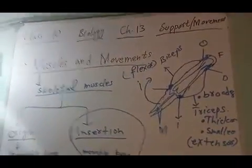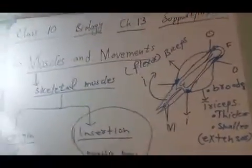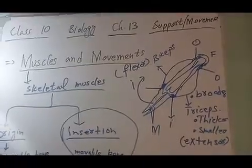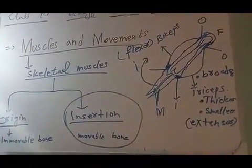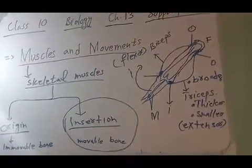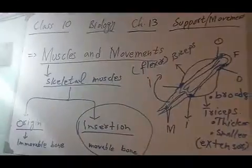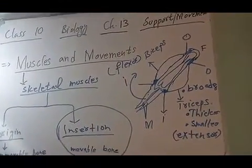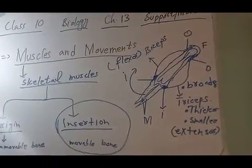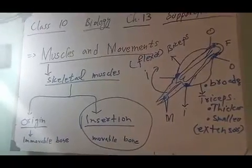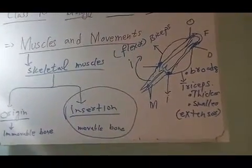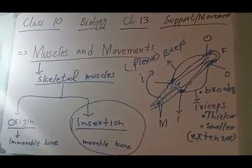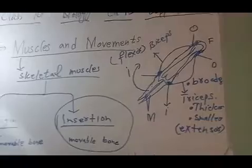Biceps is a flexor muscle because on contraction it bends the joint — it bends the arm. Triceps is an extensor muscle because on contraction it causes the straightening of the joint. The phenomenon of biceps contraction which causes bending of the joint is called flexion, and the muscle which causes flexion is called a flexor. So biceps is a flexor muscle.